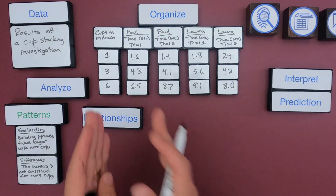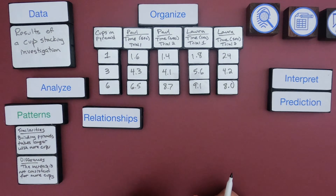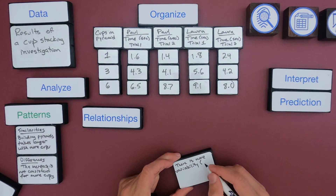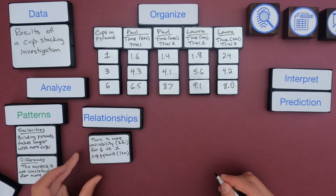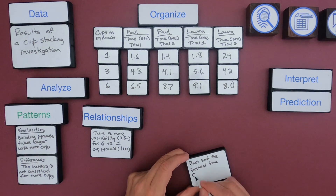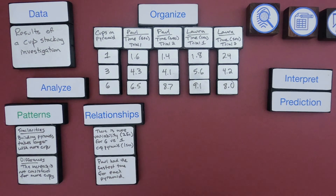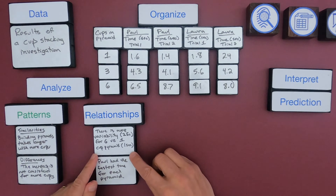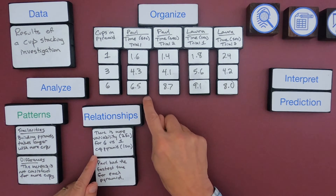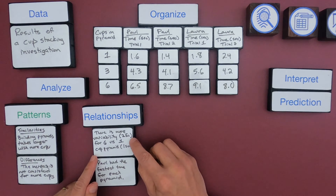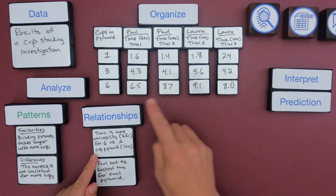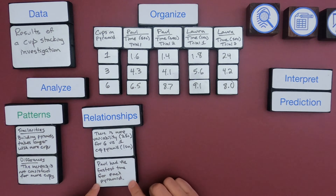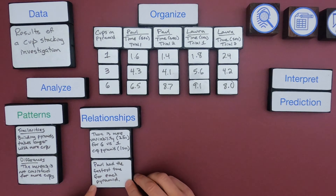Now I want to look at relationships by comparing trials and comparing different people. The first relationship is that there's more variability for the six-cup pyramid — a variance of about 2.5 seconds — versus the one-cup pyramid, where the variance was only one second. So it's more variable as we get more cups. I also want to point out that Paul had the fastest time for each pyramid.